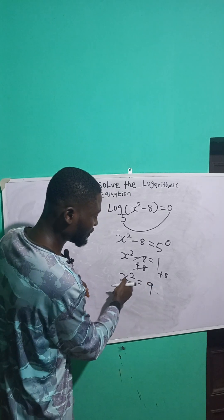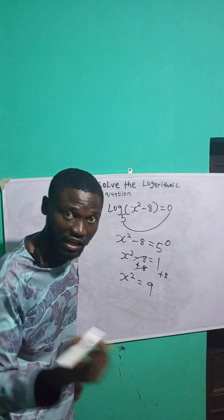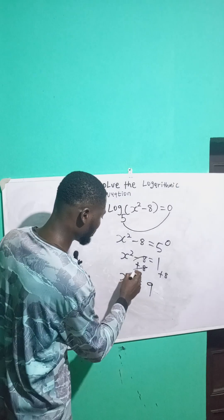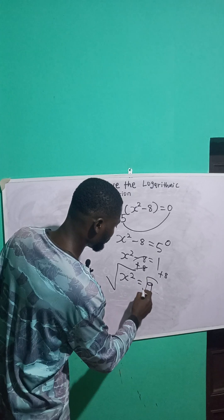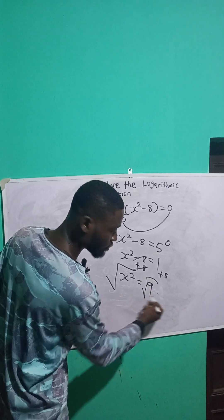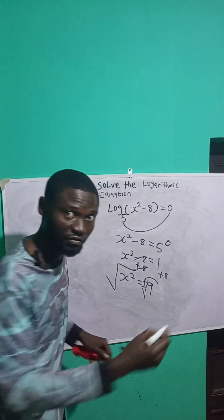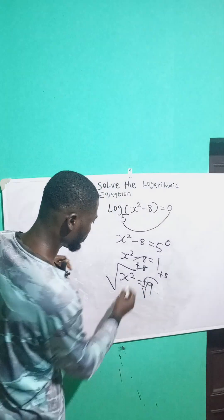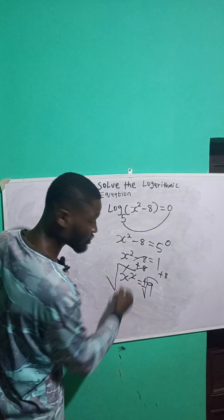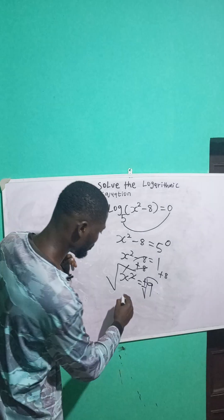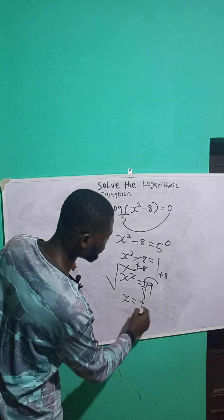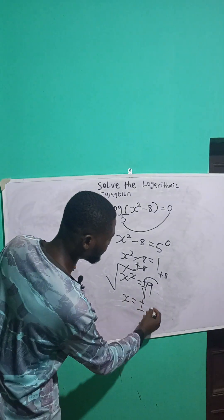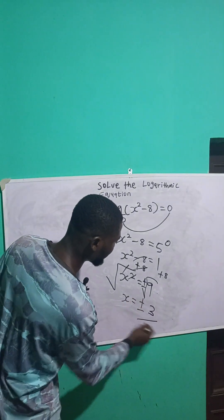I am looking for the value of x and not x squared, so I will take the square root of both sides. The square root of x squared gives x, and the square root of 9 gives both the positive and the negative — plus or minus. This square will cancel the root, so x is equal to plus or minus square root of 9, which is 3.